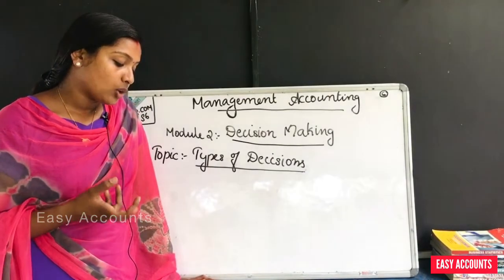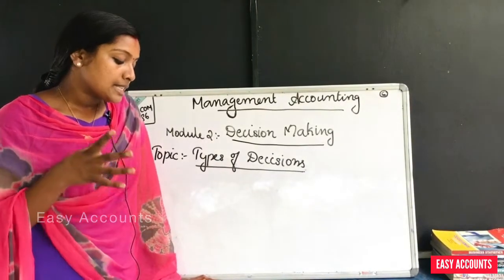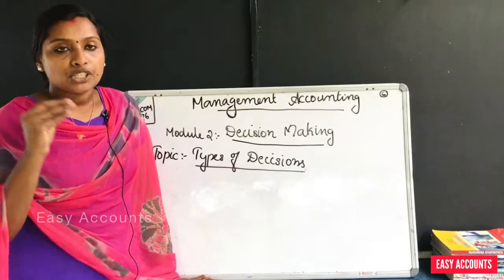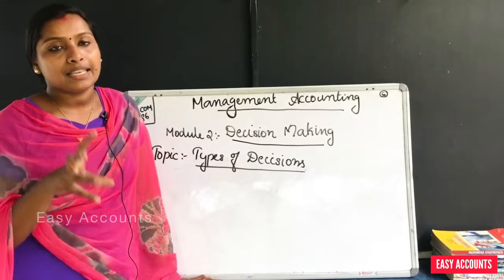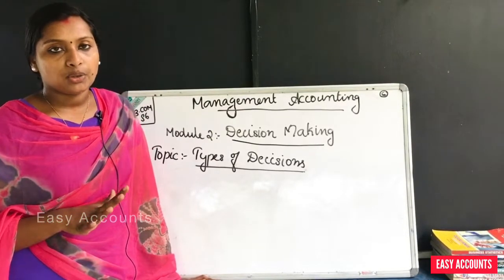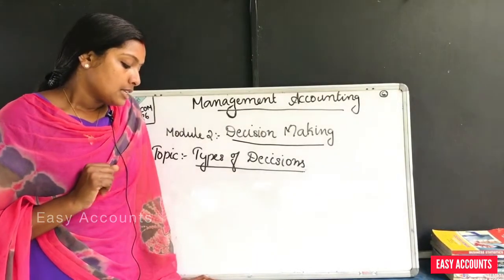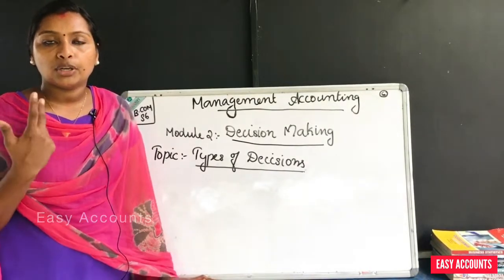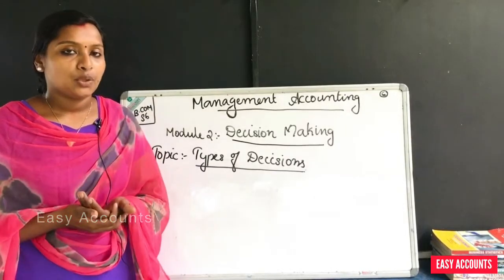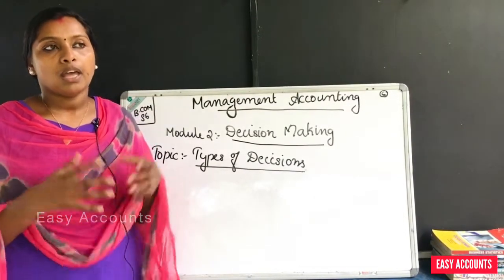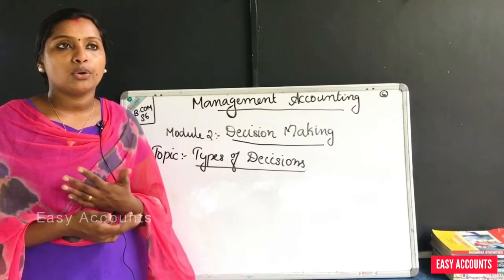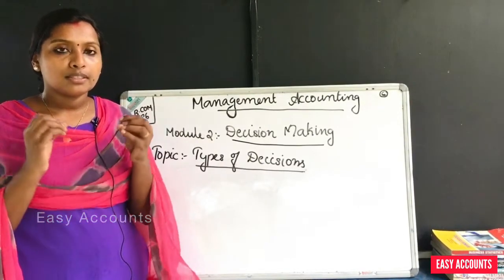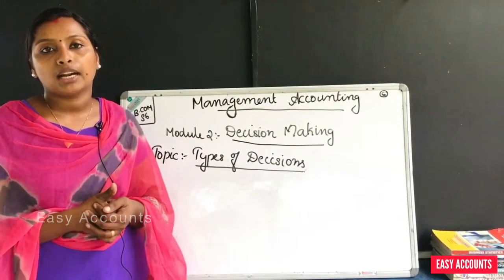Rational decisions involve a systematic analysis of all alternative solutions to a particular problem. Such decisions take more time and conscious effort. There is no chance of error, and we have a clear, well-analyzed decision. You can analyze a rational decision and compare it with a spontaneous decision.